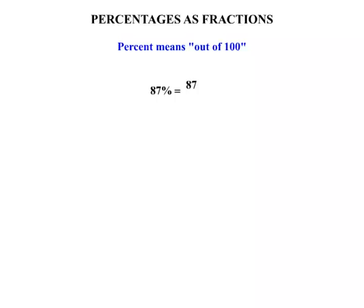So 87% would mean 87 out of 100. 9% means 9 out of 100. 12.5% would mean 12.5 out of 100.